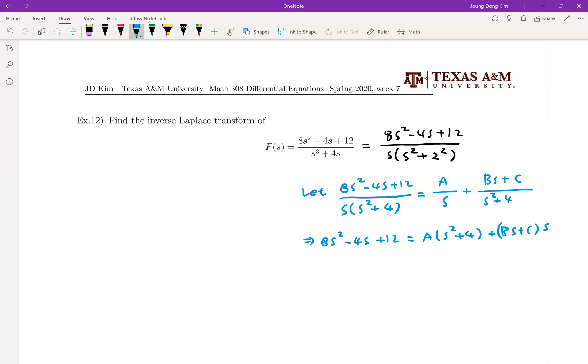When you compare your left-hand side and right-hand side, you can easily find all A, B's. You can plug in some number. When you plug in s equals 0, your left-hand side is 12, and right-hand side this part is gone to 0. Then this part is 4A, and we can find A is equal to 3. And then there's no other number which can be plugged in.